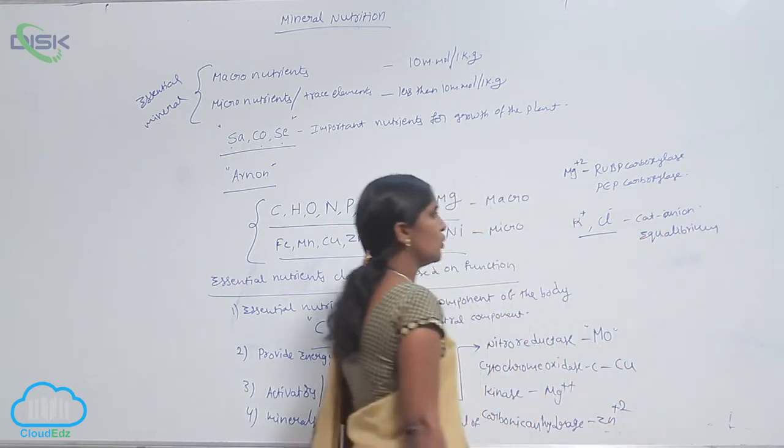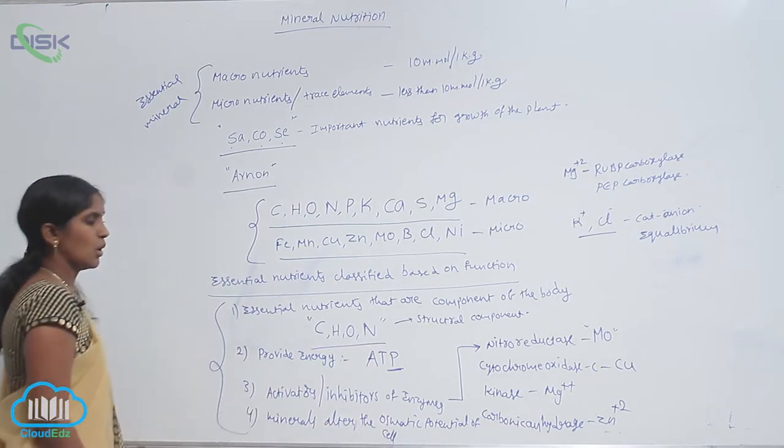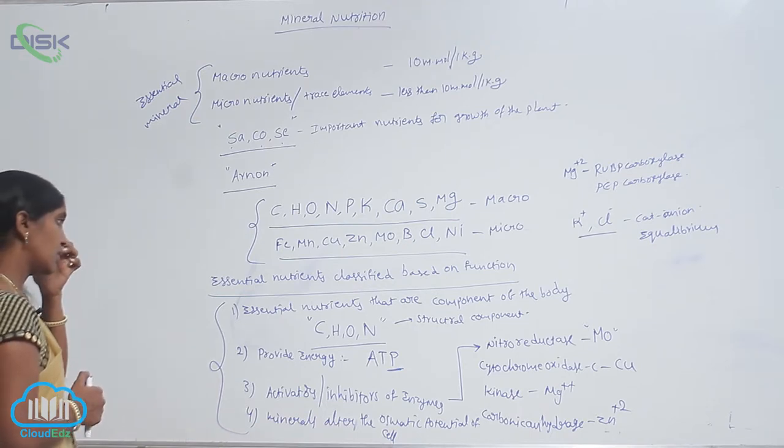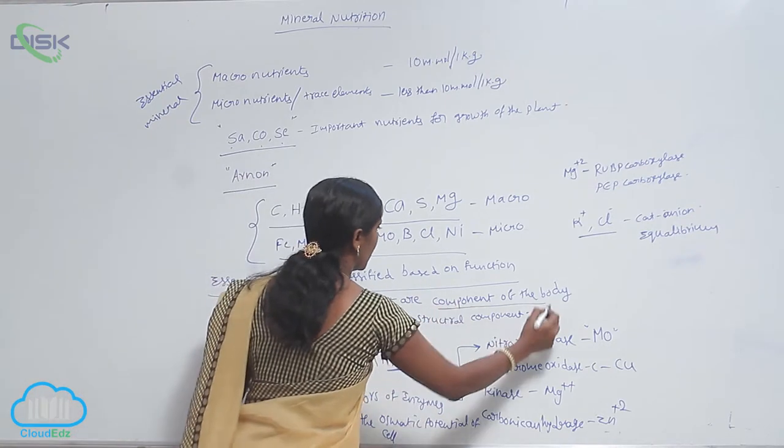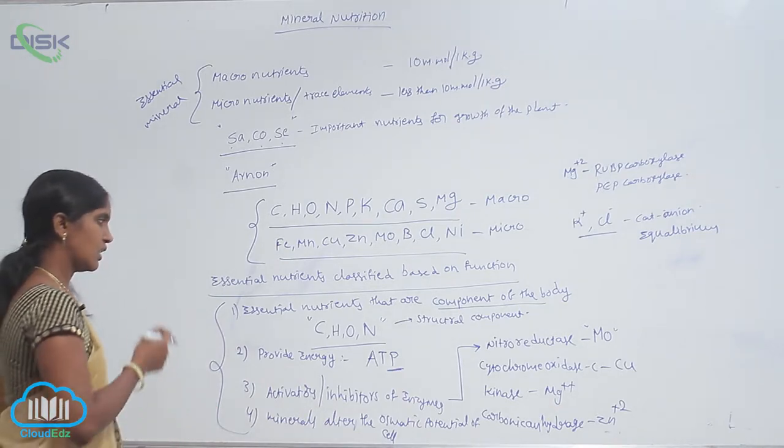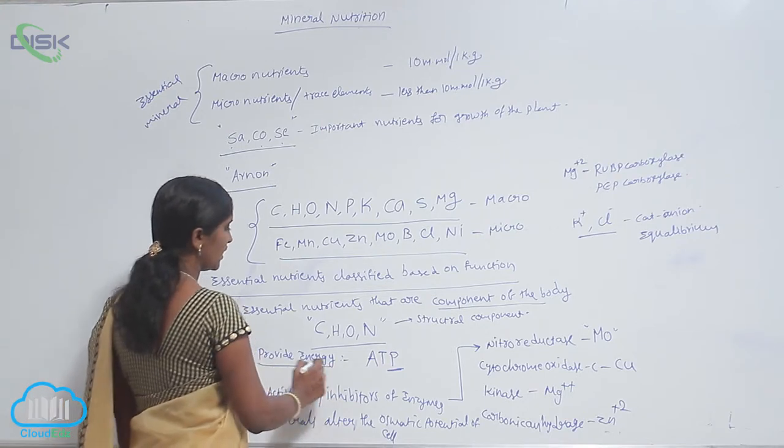So based on their functioning, they are divided into 4 ways. One is essential nutrients that work as component of the body. So they are carbon, hydrogen, oxygen and nitrogen, and essential nutrients that provide energy.